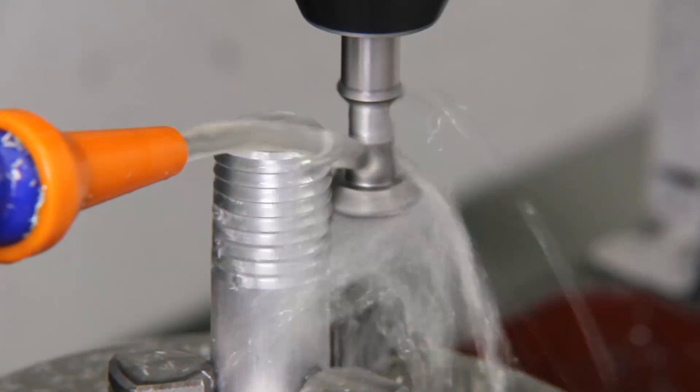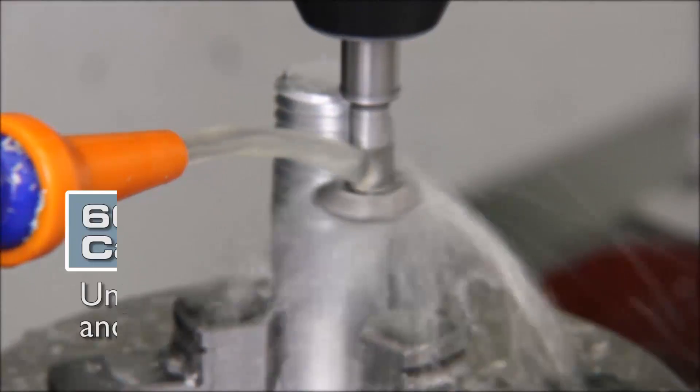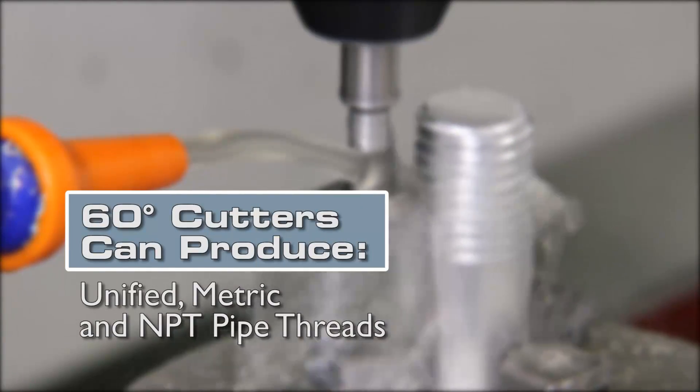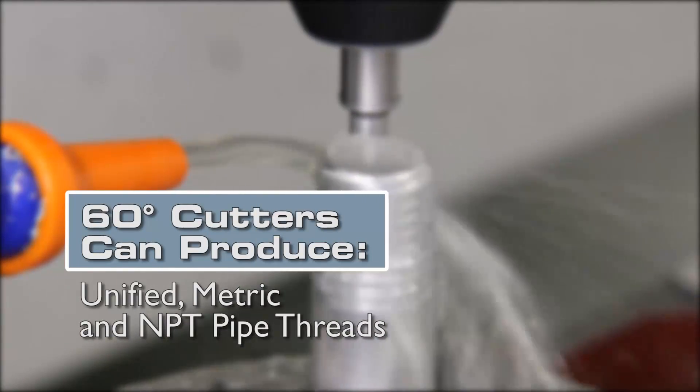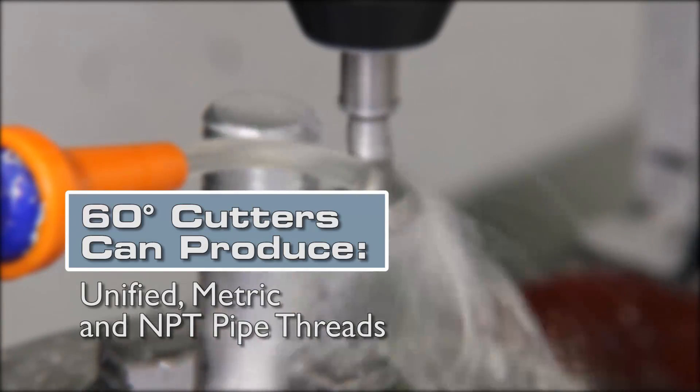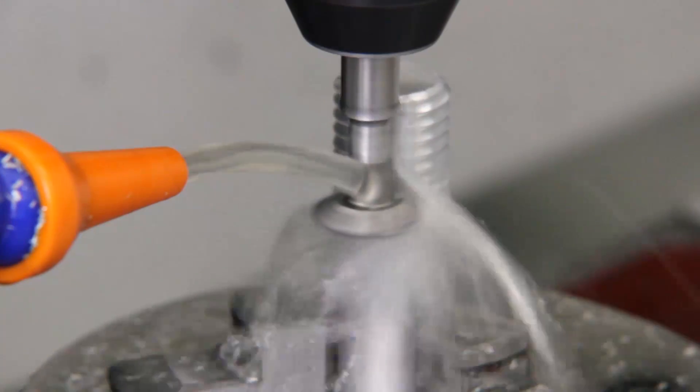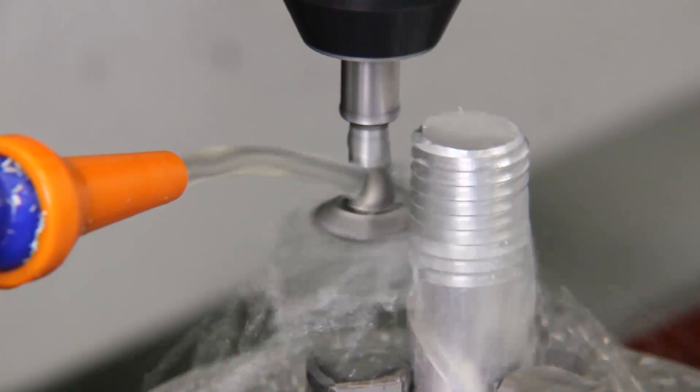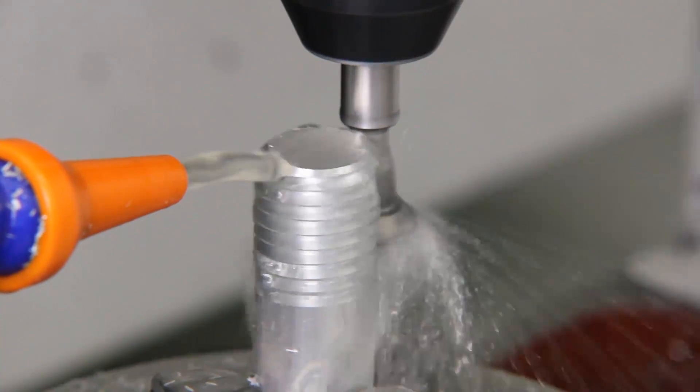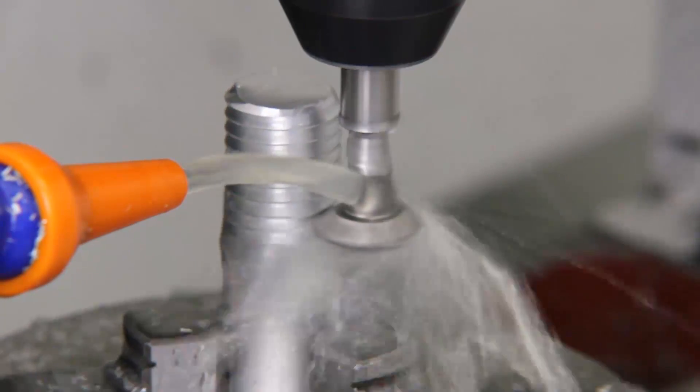With this 60 degree cutter we can produce the most commonly encountered thread systems: unified, metric, and MPT pipe threads. Other thread systems like ACME require a different cutting tooth profile but besides that can be milled in the same manner.